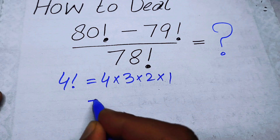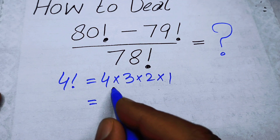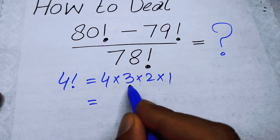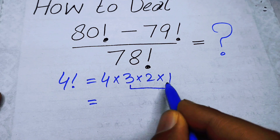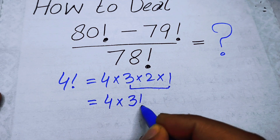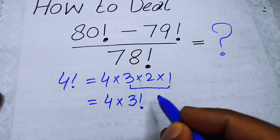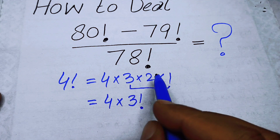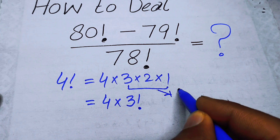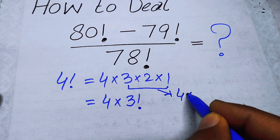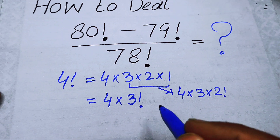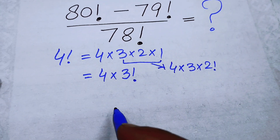One thing to remember is that you can break a factorial at any step. For example, you can write 4! as 4 × 3!, or as 4 × 3 × 2!, and so on. These are tips and tricks we will use in the solution.